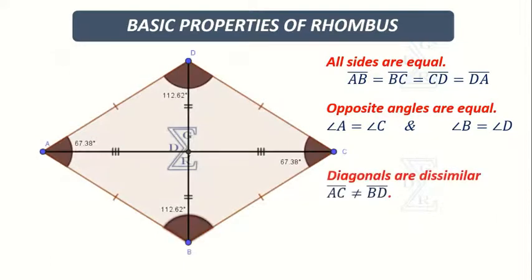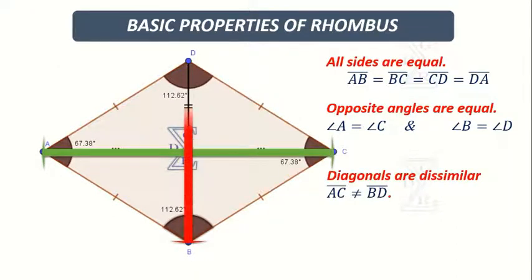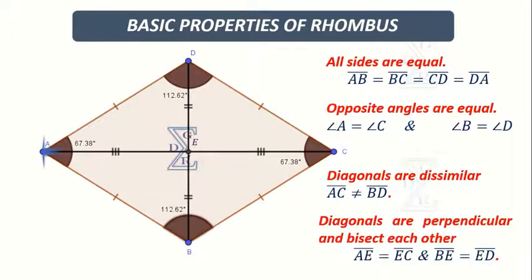Diagonals are dissimilar. That is, the line segment AC is not equal to the line segment BD. But,